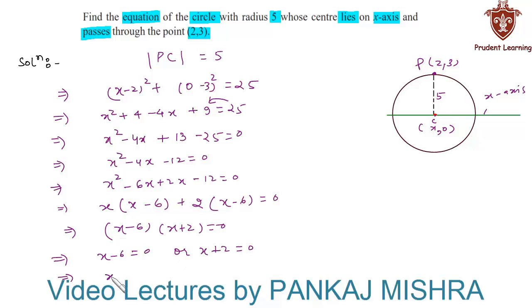This means we can have coordinates of the center either as (6,0) or (-2,0). This implies that the given condition holds true for two different circles: one having center (6,0) and the other having center (-2,0).